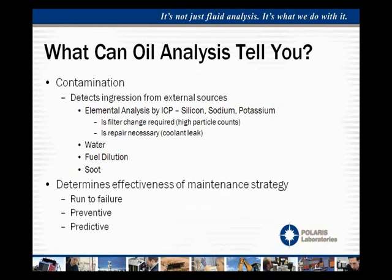All this information together can be used to determine the effectiveness of the current maintenance strategy and to move toward a different type of strategy. If you're currently in a run-to-failure mode, this data lets you start doing work upfront to eliminate putting out fires from unexpected failures. It can move you toward preventive maintenance where you're preventing failures from happening, and further toward predictive maintenance where you're making repairs before failure occurs — making minor repairs as opposed to major ones.